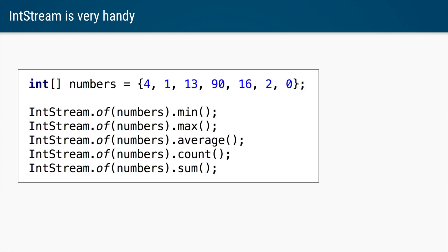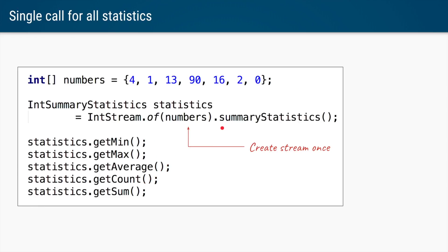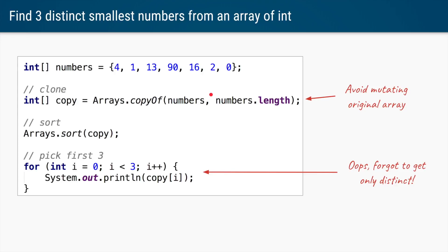Similar to minimum, there are multiple other functions to gather statistics from an array: get the maximum number, get the average of all the numbers, get the count, and get the sum. If you need all of these for a specific array, you'd have to keep calling IntStream.of(numbers) again and again. To avoid that, Java 8 IntStream has a function called summaryStatistics, which returns an IntSummaryStatistics object with methods getMin, getMax, average, count, and sum.